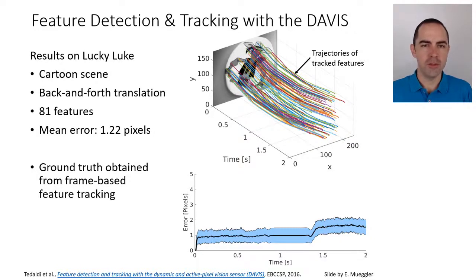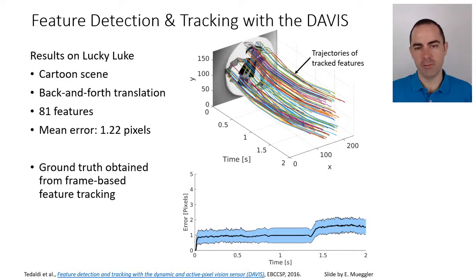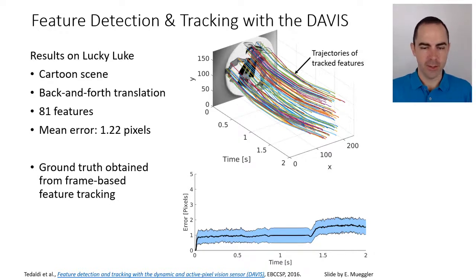A slightly more natural scene — still somewhat cartoonish — involves translation back and forth left and right, tracking 81 features with a mean error of 1.2 pixels. The bottom plot shows average error over time with a one standard deviation band. Ground truth was obtained using a frame-based tracking algorithm — the classical KLT (Kanade–Lucas–Tomasi) tracker.